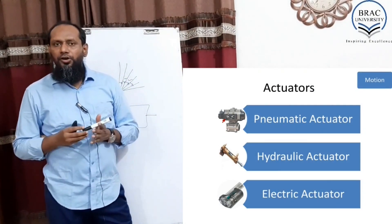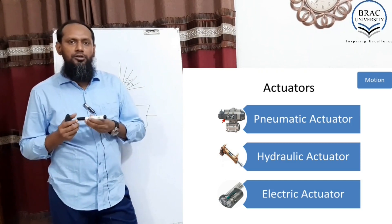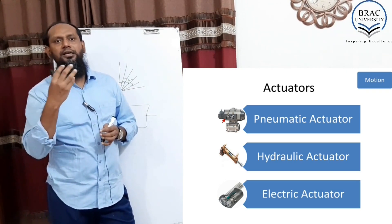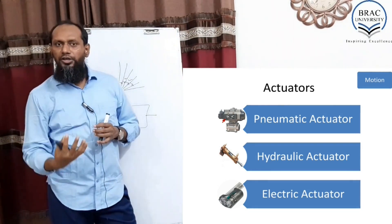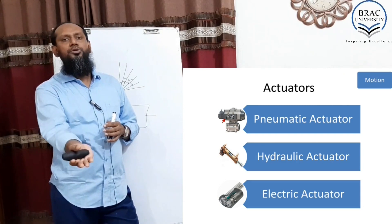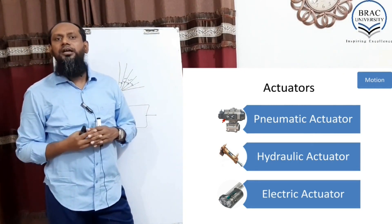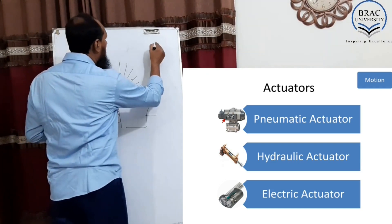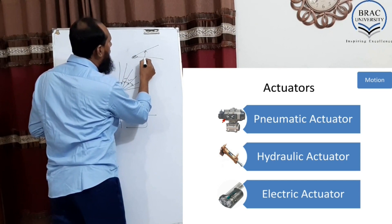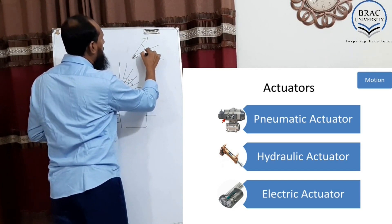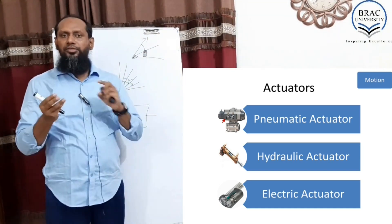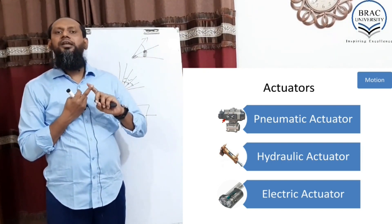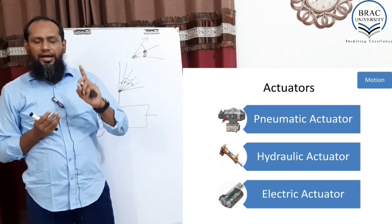An actuator is used for linear motion — forward and backward movement. In heavy trucks used for road work, hydraulics are used to pull things up. There are three kinds of actuators: pneumatic, hydraulic, and electric. The hydraulic actuator is the most popular one.